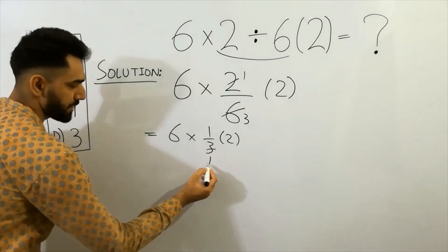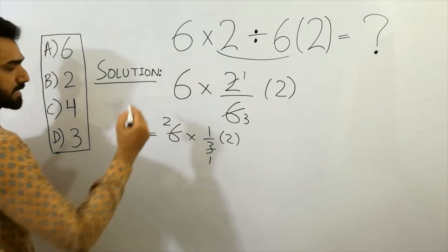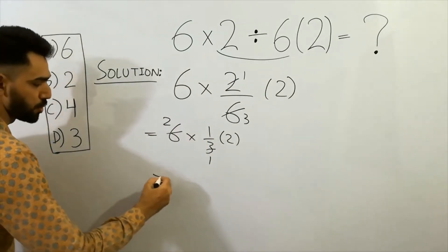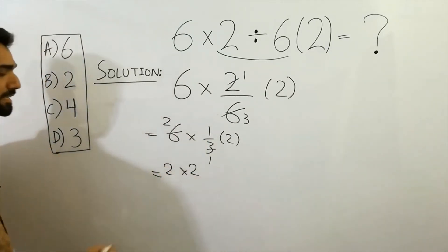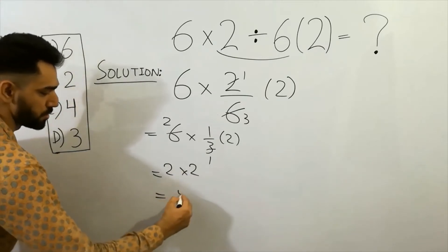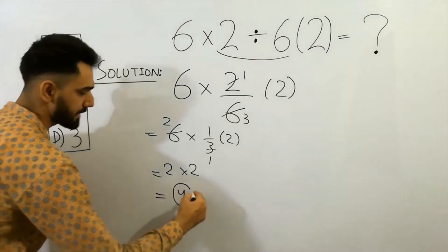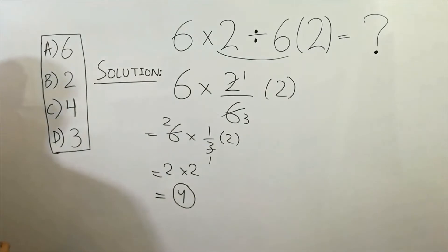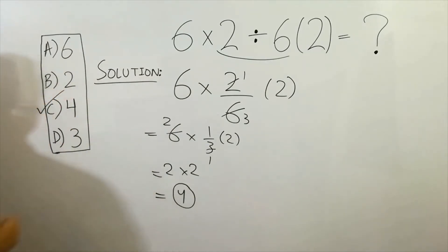Next step: three ones are three, three twos are six — we get two multiplied by two. Two twos are four, so four is the right answer of this question. Option C is correct.